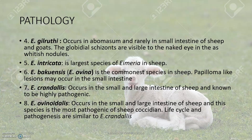Eimeria gilruthi, present in both goats and sheep, mainly occurs in the abomasum and rarely in the small intestine. An important point: it occurs in the abomasum, and the globidial schizonts — very large schizonts — are visible to the naked eye as whitish nodules.